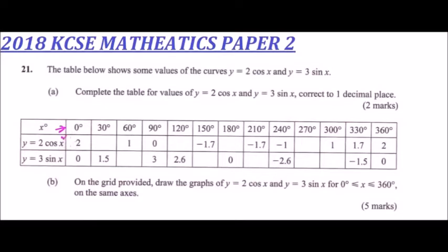This is y equals 2 cos x and y equals 3 sin x. So these are two functions. To fill this table, it's just like 2 marks. Y equals 2 cos 30, you multiply by 2 and that should give you 1.7. Use your calculator. Then we come to 120. 2 multiplied by the cosine of 120, you get minus 1.